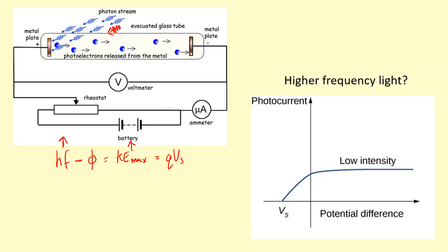So we'll have a larger stopping voltage over here. But the intensity should be the same because the number of photons per unit time is still the same. So the number of electrons emitted per unit time should still be the same. Even though they're coming out faster, the number of electrons per unit time will be the same.